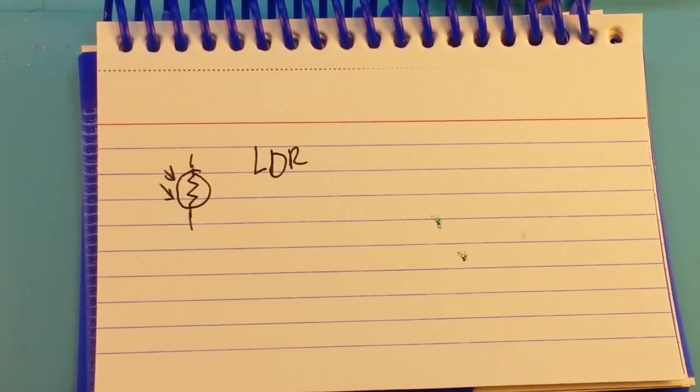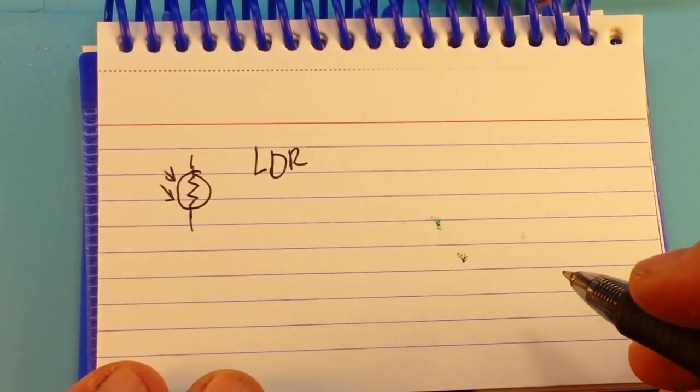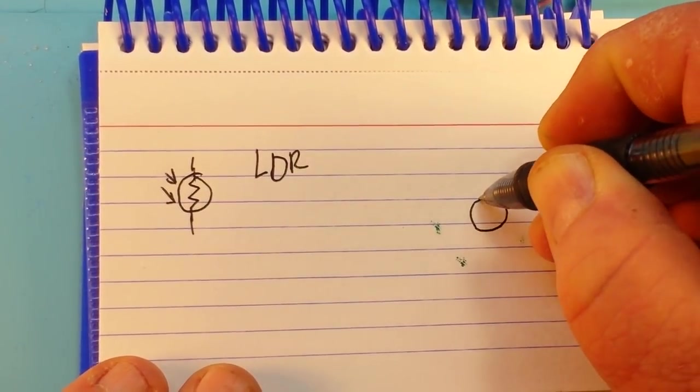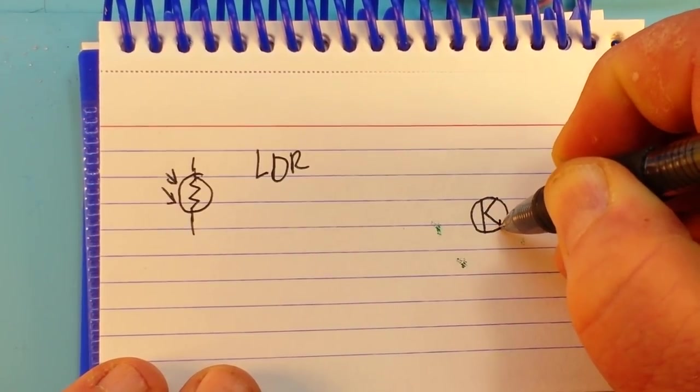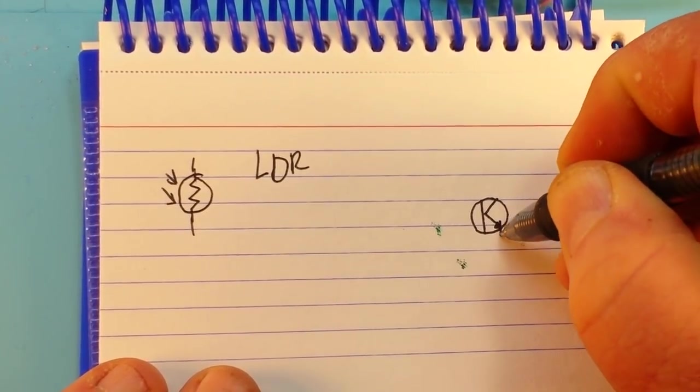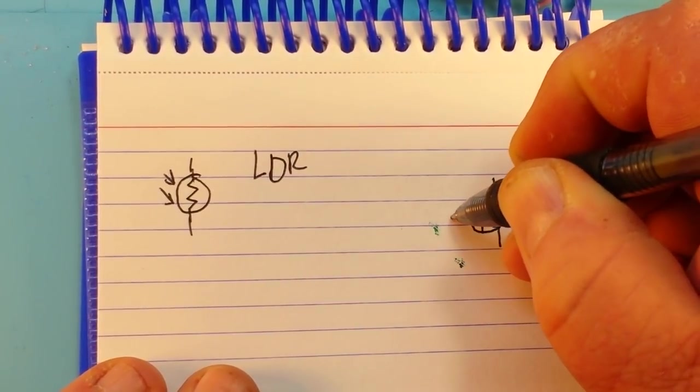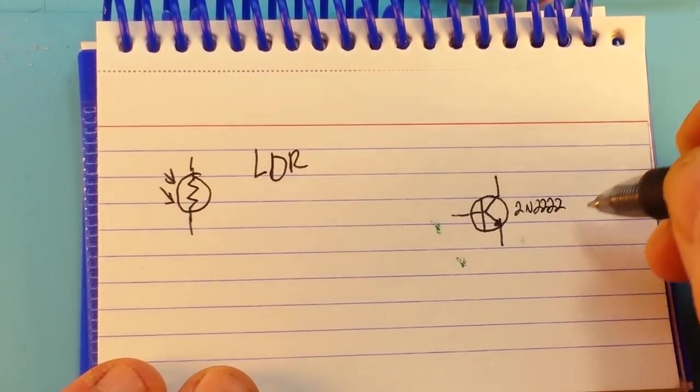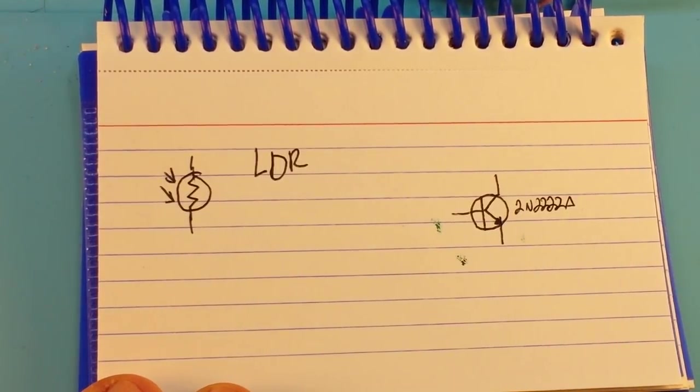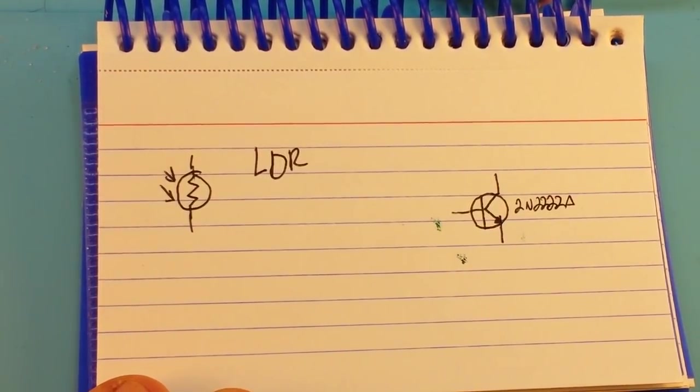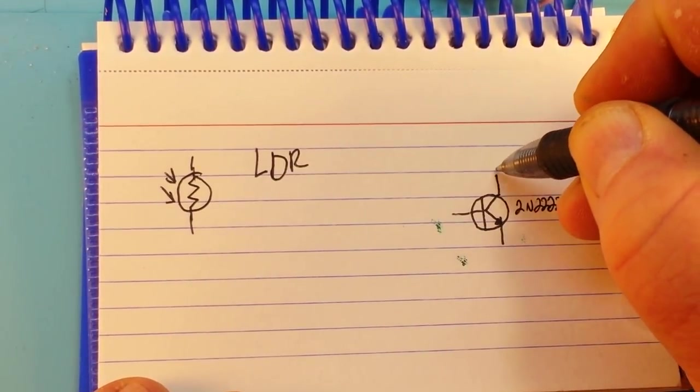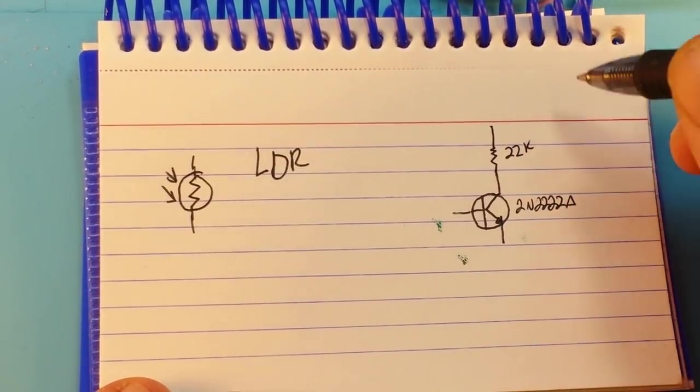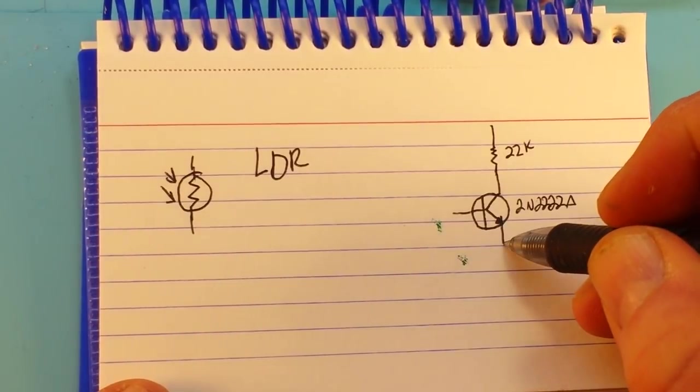So our circuit here, which is really simple, let's start off with the transistor. In this case I'm using an NPN transistor, my favorite NPN transistor, the 2N2222A. Now on the collector of that transistor we've got a 22k resistor to limit the current.